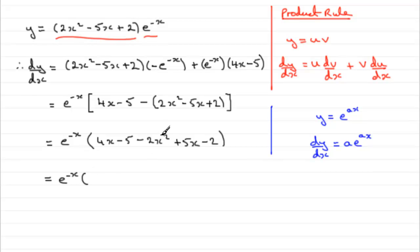And I can group some of these terms together to finally end up with e to the minus x. And then normally I'd want to go in descending powers of x, but the first term here is negative, so I'm not going to do that. Look for the first positive term, and that's going to have to be the x term here. 4x and 5x is 9x.